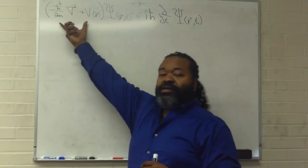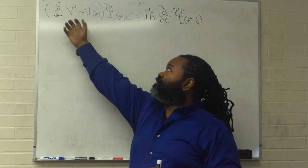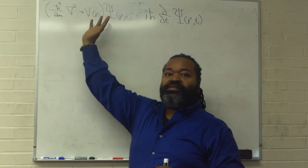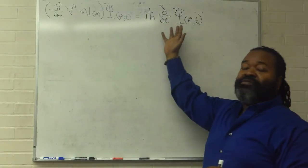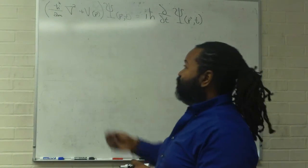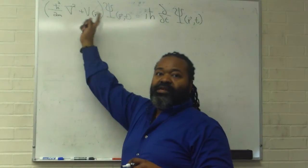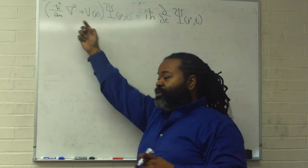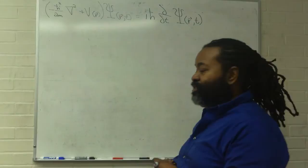We have here our partial derivatives that deal with space and our partial derivative that deals with time. For the sake of brevity, I can replace this with operator H for the Hamiltonian because that's our kinetic plus potential.